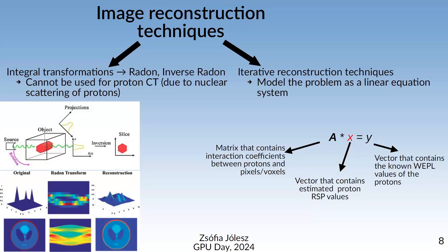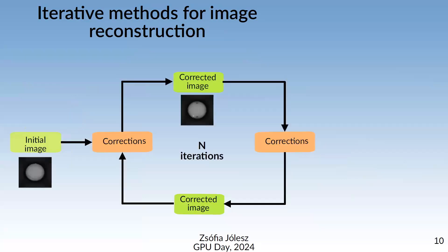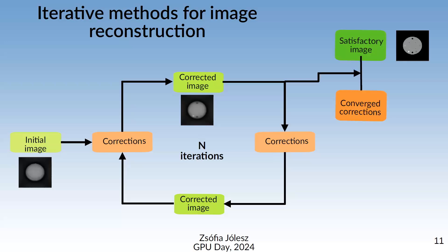How does an iterative algorithm work? We start with an initial blurred image from which we cannot tell much. We apply some corrections, review the corrected image, apply further corrections, and review again — repeating this for a number of iterations. These iterations end when we get a satisfactory image and/or the corrections have converged.